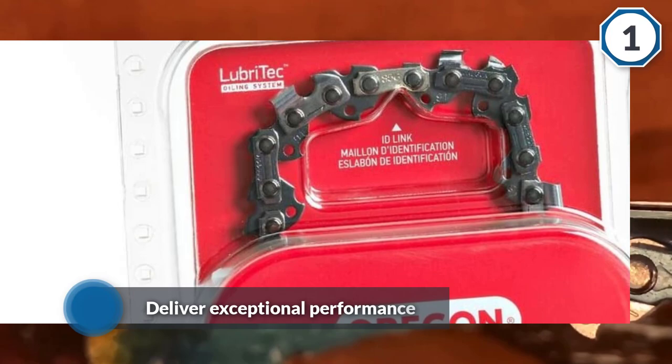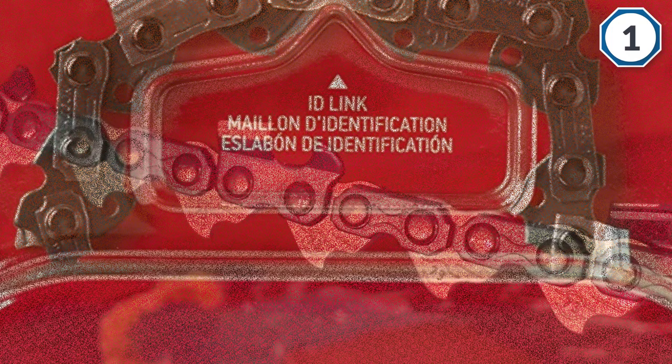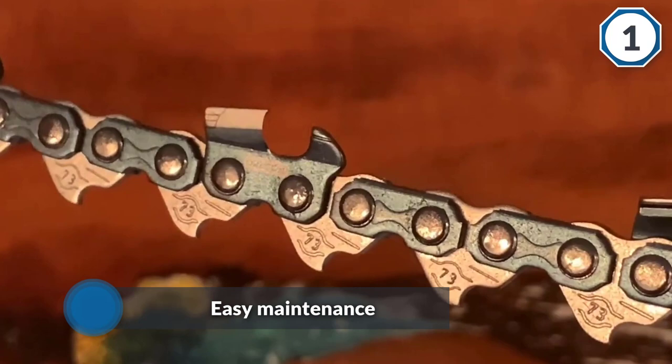The S56 16-inch chainsaw chain is designed with the quality, sharpness, toughness and speed that we've come to expect from Oregon. It's easy to install and once in place helps smaller 16-inch chainsaws tackle tasks with speed and precision.